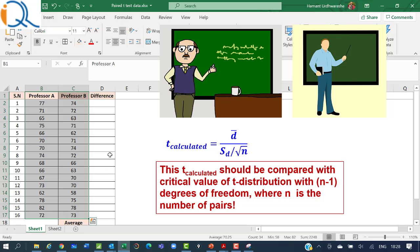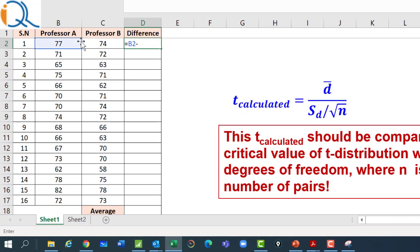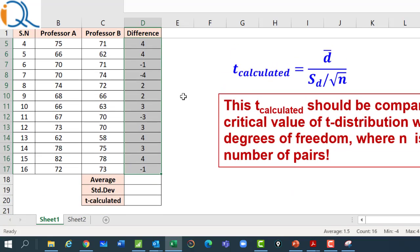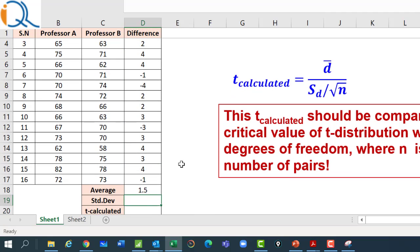We will use Microsoft Excel to illustrate the calculations. These are the marks as per the assessment of the two professors, professor A and professor B. First, we need to find out the difference between marks assessed by A minus marks assessed by B. We could also do the other way around, B minus A. So we will do A minus B. And we will just copy the formula. So these are the differences of A minus B.